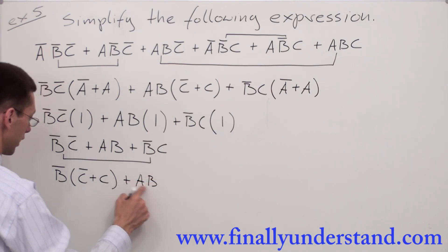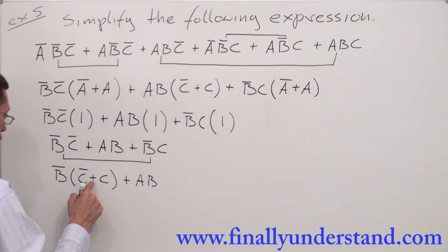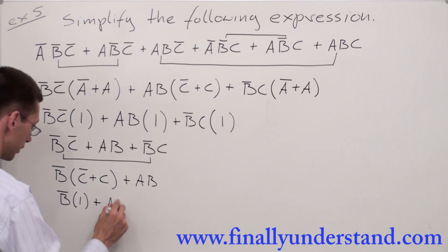C bar or C will always give me 1. I'm going to have B bar times 1 or AB.